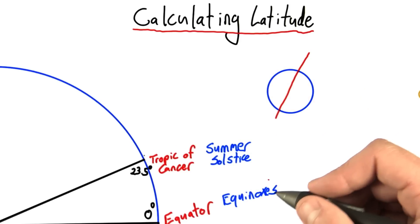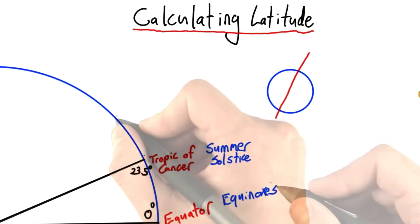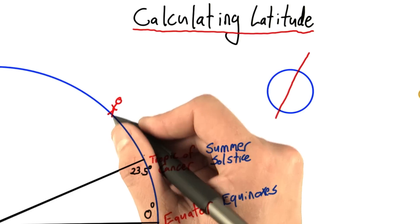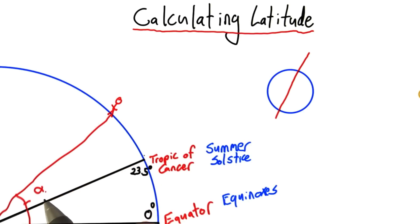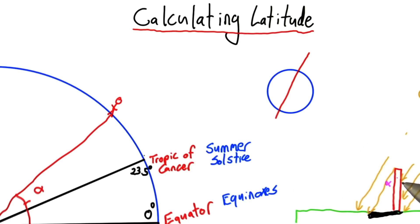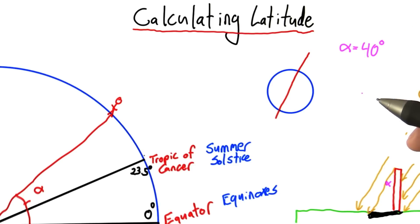Now, thinking back to what we did in unit one, let's say you're standing at some unknown latitude. Remember, your latitude will just be this angle here, which I've labeled alpha. And let's say it happens to be one of the equinoxes, so the sun is directly above the equator, and you do an experiment. You look at a vertical object, measure its shadow, and do some trigonometry to find that the angle, labeled alpha, is equal to 40 degrees.